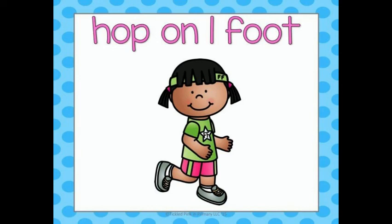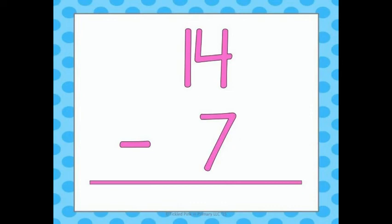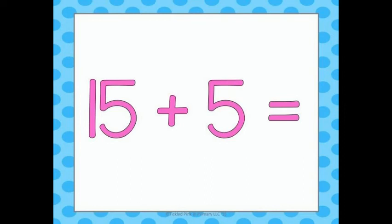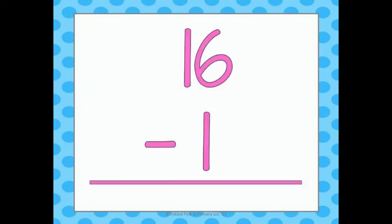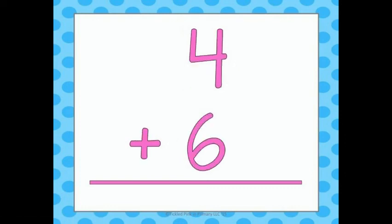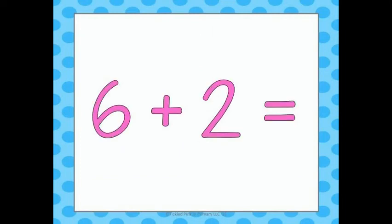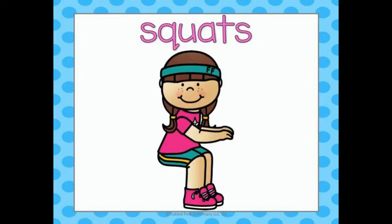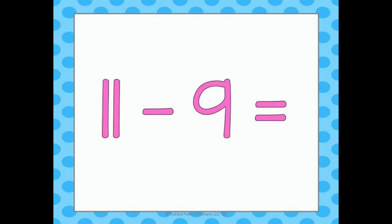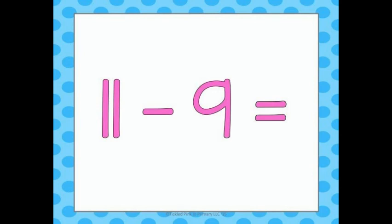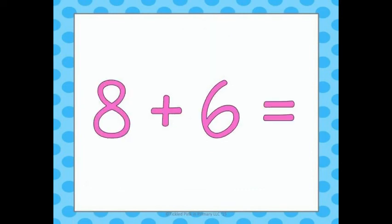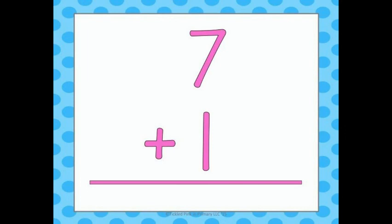Hop on one foot. 14 minus 7 equals 7. 15 plus 5 equals 20. You guys are doing great. 16 minus 1 equals 15. 4 plus 6 equals 10. 6 plus 2 equals 8. Time for some squats. 11 minus 9 equals 2. 13 minus 9 equals 4. 8 plus 6 equals 14. That one was really tricky. 7 plus 1 equals 8.